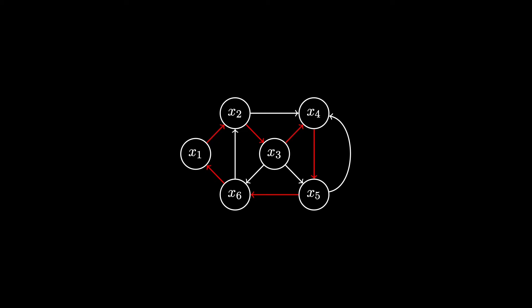This means that a zero knowledge proof for Hamiltonian cycle can be used as a zero knowledge proof for every problem in NP.